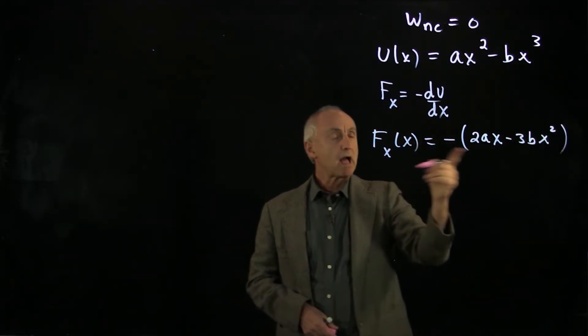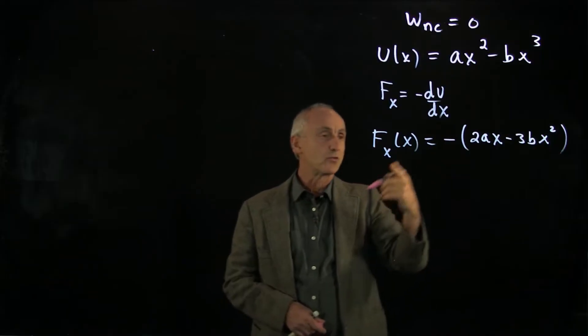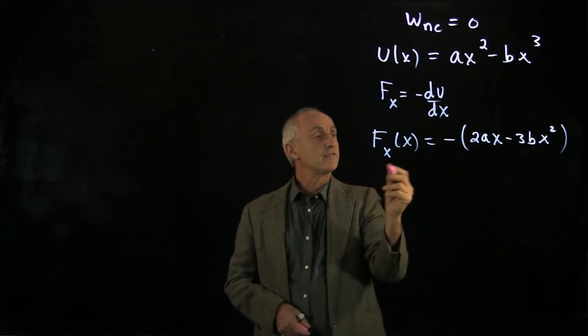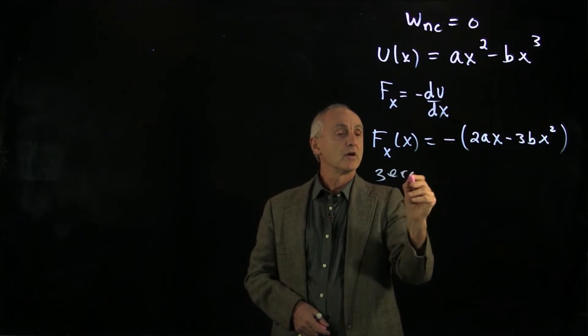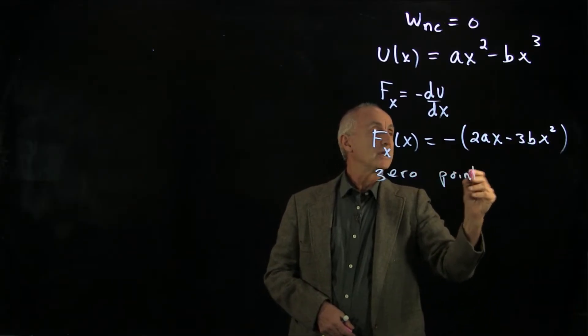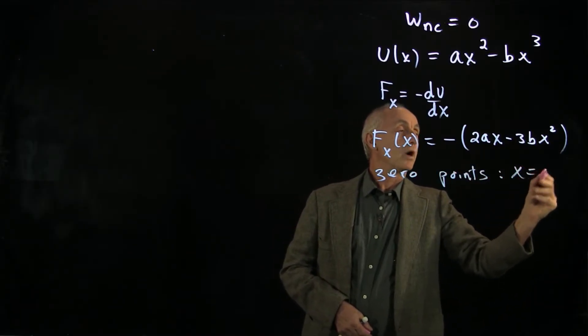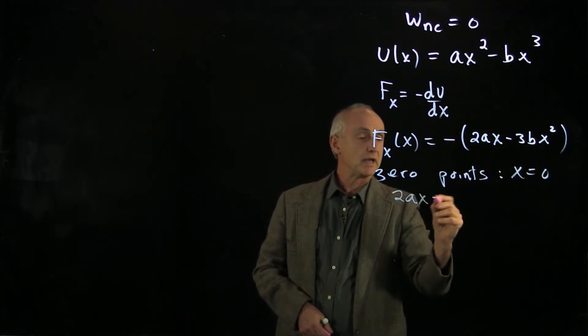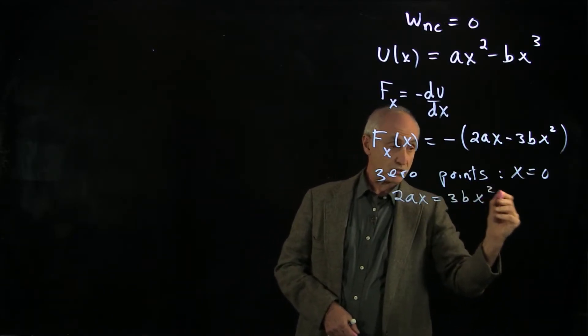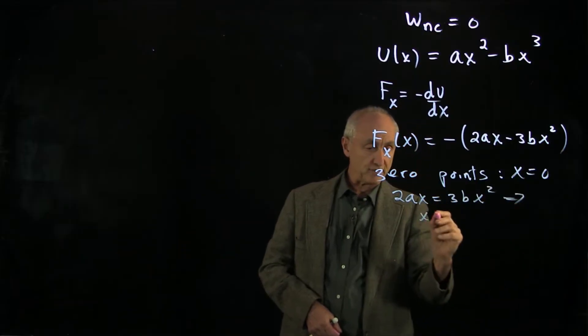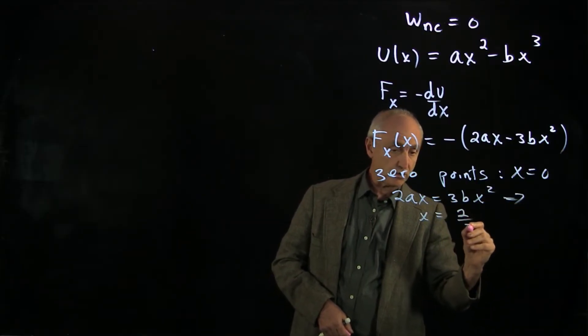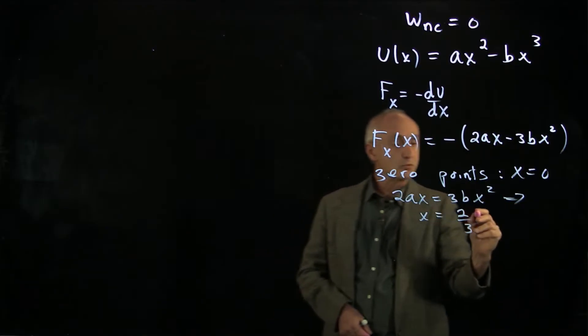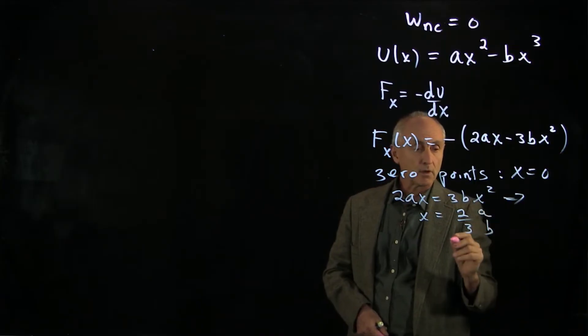Now we ask ourselves, where does this force vanish? If we look at the zero points for the force, we can see immediately that there's one at x = 0. The other one, if we set 2ax equal to 3bx², tells us that we have another zero point at x = 2a/3b.